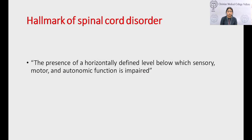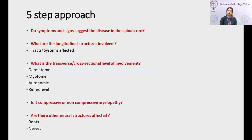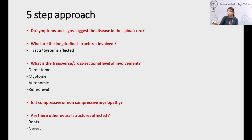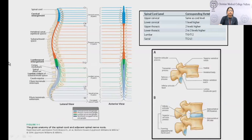Taking from the initial talk on clinical localization: any neurological deficit showing motor weakness, sensory involvement, and autonomic involvement forms the hallmark of a spinal cord disorder. The five-step approach when facing a patient with suspected myelopathy requires determining: whether symptoms and signs suggest spinal cord disease, which longitudinal structures are involved (ascending and descending tracts), what is the transverse or cross-sectional level of involvement, whether it is compressive or non-compressive, and whether other neural structures such as roots and nerves are affected.